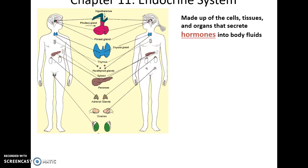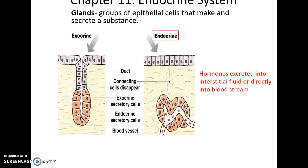The endocrine system is made up of cells, tissues, and organs that secrete hormones. There are two main types of glands: exocrine glands that secrete stuff onto a surface, and endocrine glands that secrete hormones into either the interstitial fluid around the structure or directly into the bloodstream.